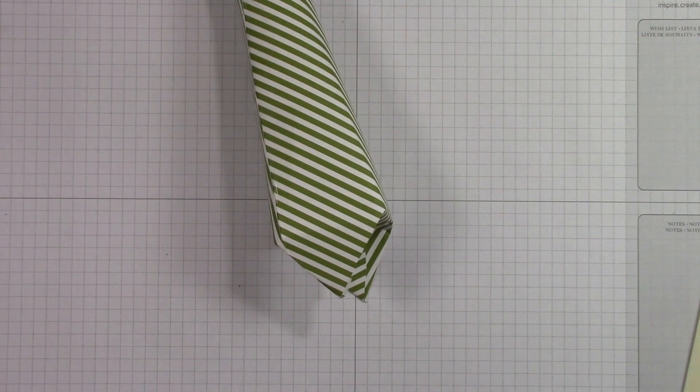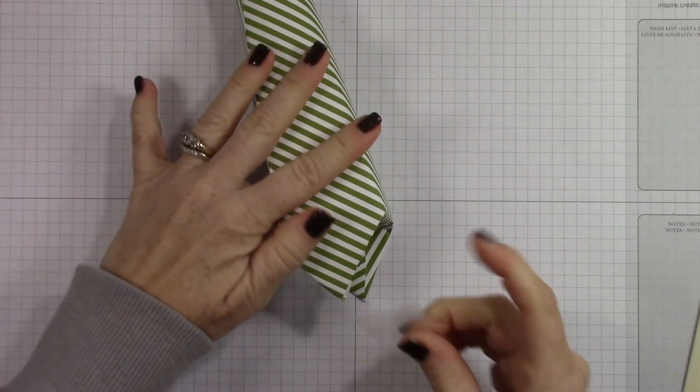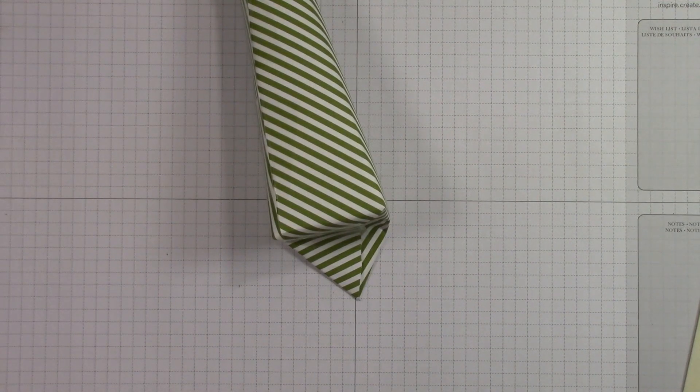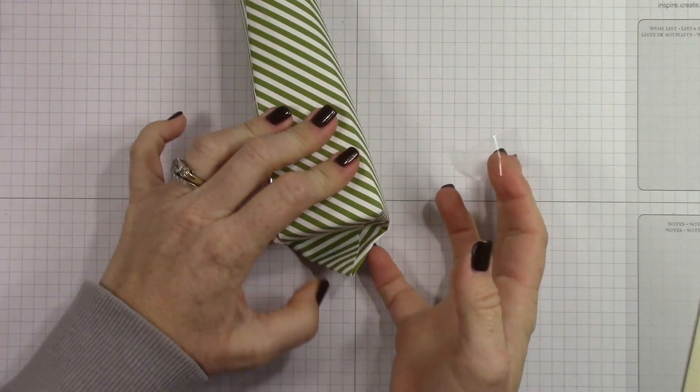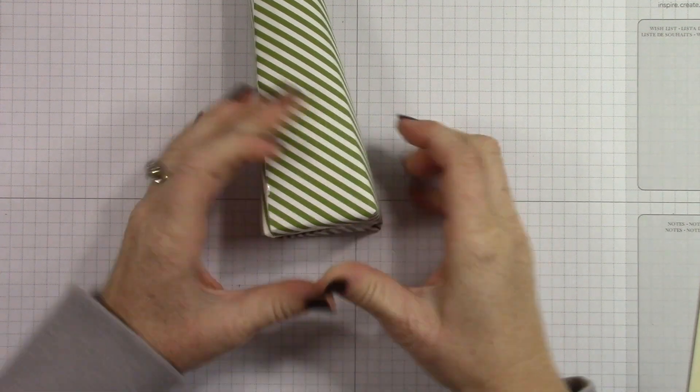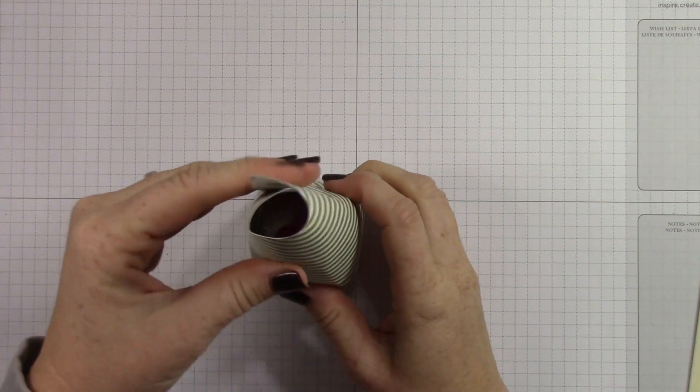So my husband and I have two different styles of wrapping and I've decided that there are people that wrap like him in the world and people that wrap like me. And his style of wrapping is to push everything in on one side and then fold over the rest.